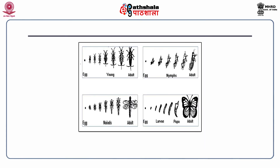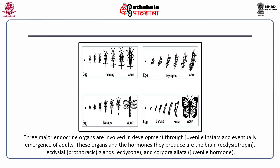The current slide shows the four different metamorphic forms: ametabolous, paurometabolous, hemimetabolous and holometabolous metamorphosis. Metamorphosis is basically governed by three kinds of insect hormones: one produced by the brain known as PTTH or ecdysiotropin, another produced by the prothoracic glands known as ecdysterone, and a third produced by the corpora allata which synthesizes juvenile hormone.